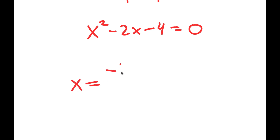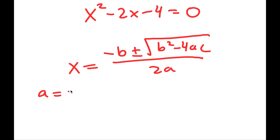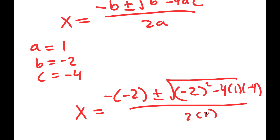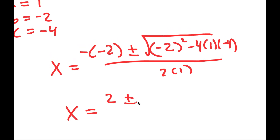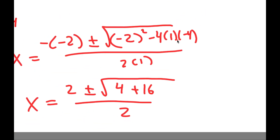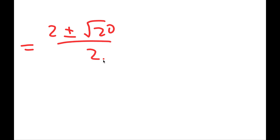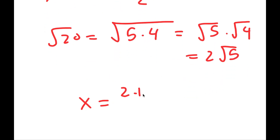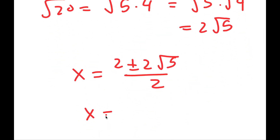To solve this, I'm going to use the quadratic formula: negative b plus or minus the square root of b squared minus 4ac, all over 2a. Here a is 1, b is negative 2, and c is negative 4. So I get x equals 2 plus or minus the square root of 4 plus 16, over 2, which is 2 plus or minus the square root of 20 over 2. The square root of 20 equals 2 root 5, so x equals 2 plus or minus 2 root 5, over 2, meaning x equals 1 plus or minus the square root of 5.